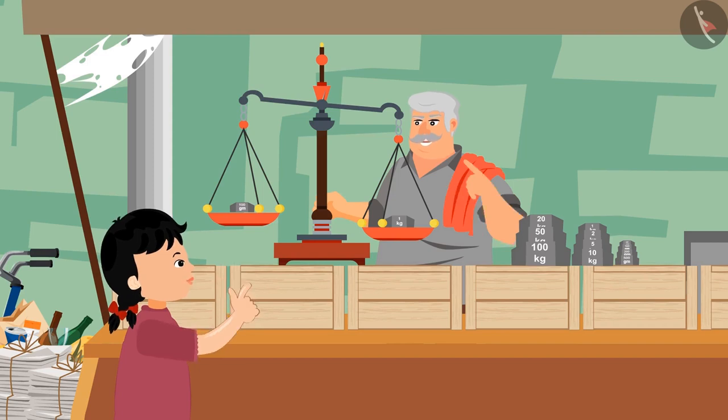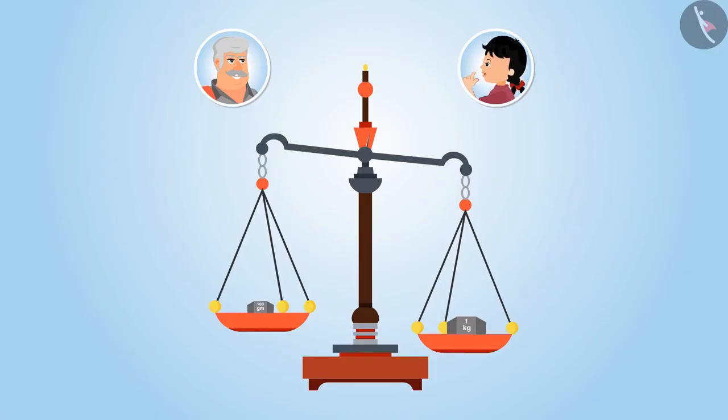This is because weight on both the sides is different. No uncle, look. This is of 1 kg and this is of 100 grams. Both are equal, right?